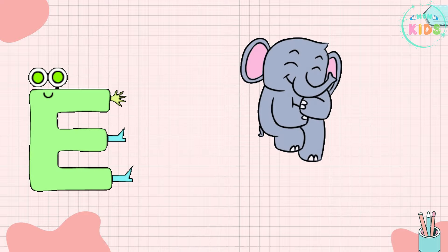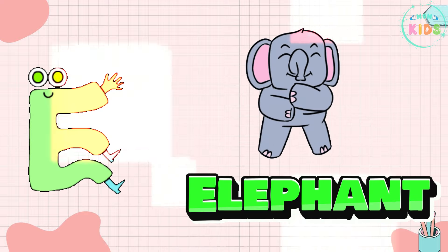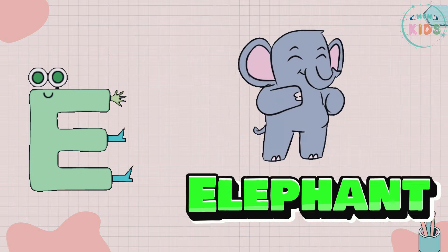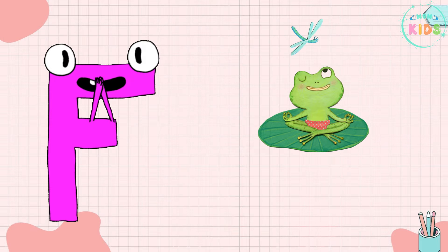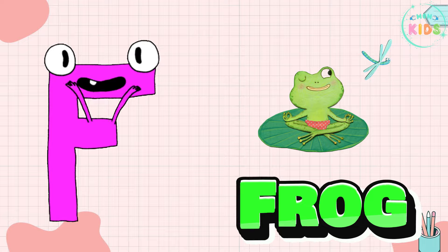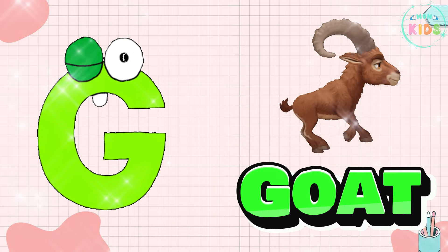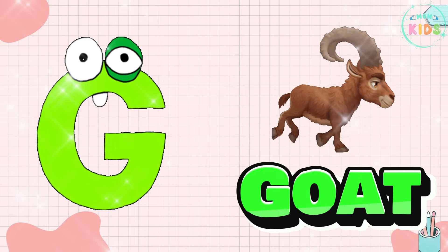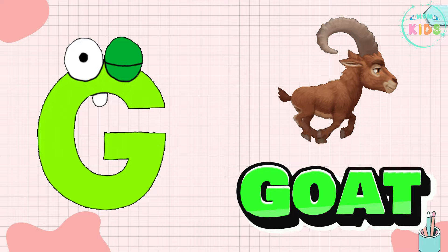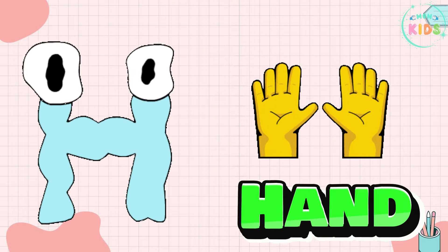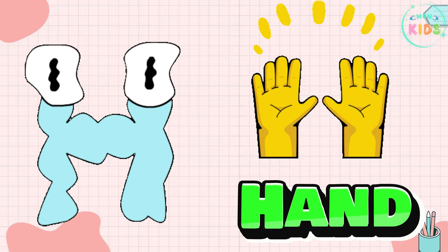E is for Elephant, E-E-Elephant. F is for Frog, F-F-Frog. G is for Goat, G-G-Goat. H is for Hand, H-H-H-Hand.